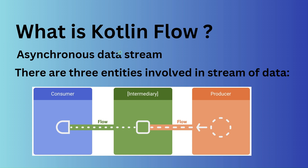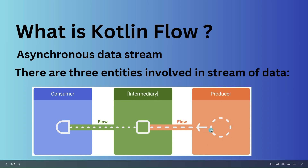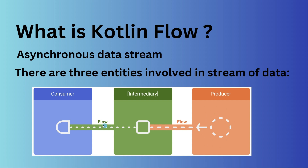So when we talk about the data stream, three entities come into the picture: consumer, producer, and intermediary. This producer can produce the stream of data, and that stream of data will get delivered to the consumer via intermediary. This intermediary has the capability to modify the data coming from the producer. If the data stream doesn't need any kind of modification, then this intermediary layer will be optional.